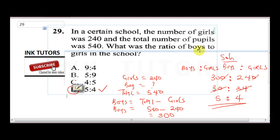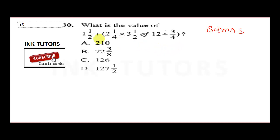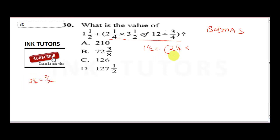The next question asks for the value of an equation. We'll be applying BODMAS. We deal with the bracket first, which contains 2 and 1/4. Inside we have one and a half plus two whole number one over four, times — remember three and a half is the same as seven over two — so this becomes times seven over two.